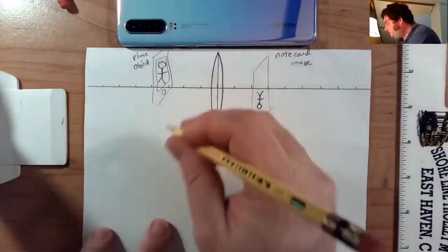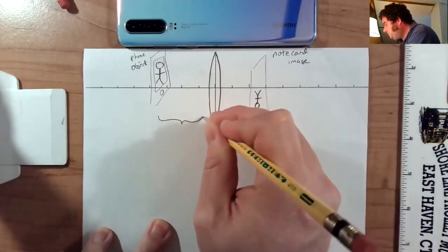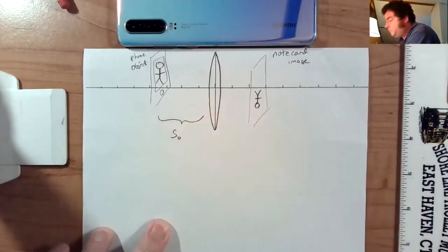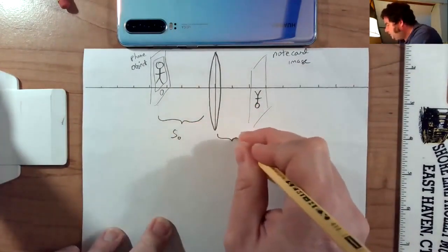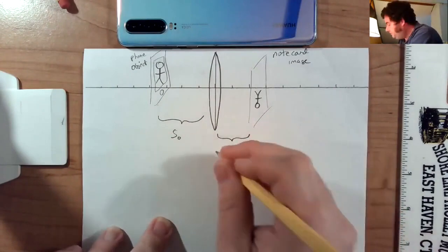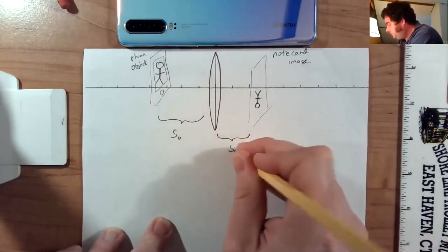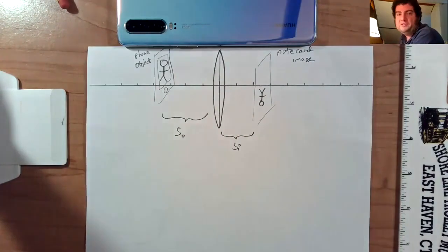So the object distance, which usually would be the thing we change, gets labeled SO, for distance object. S is traditional here. The note card is the image. So SI for image distance.